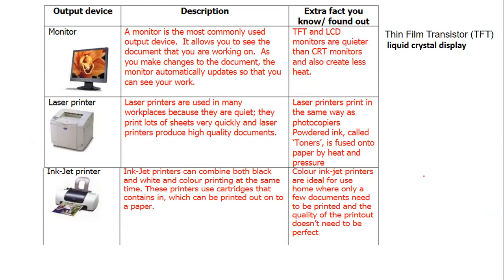Now output devices. Monitor: commonly called an output device, it allows you to see the document you are working on, make changes, and update it. We have thin-film transistor or liquid crystal display monitors which create less heat. Laser printer: used in many workplaces because they print a lot of sheets very quickly and produce high-quality documents. Laser printers are like photocopiers — powdered ink called toner is fused onto the paper by heat and pressure to print the content.